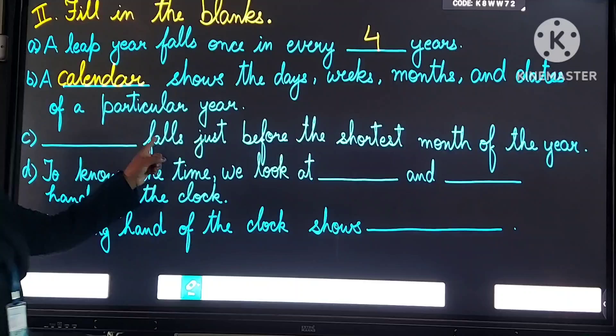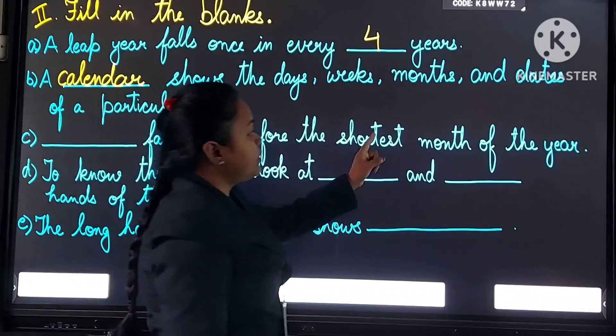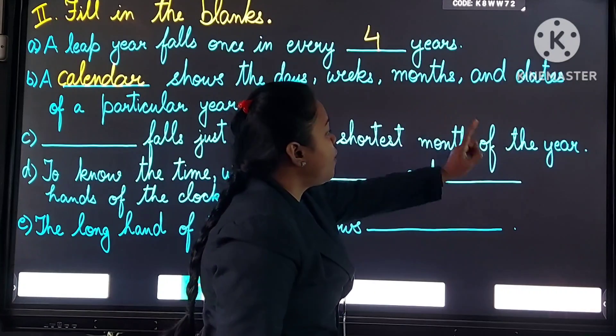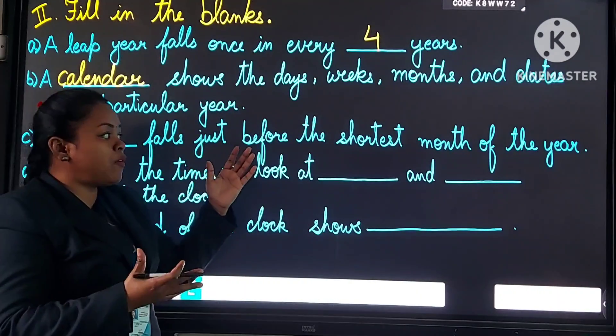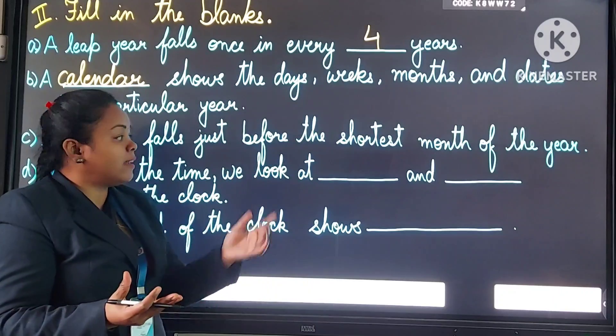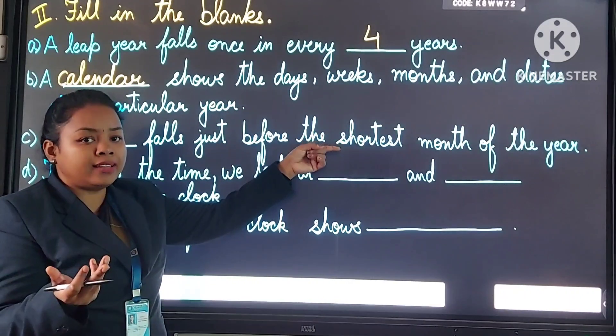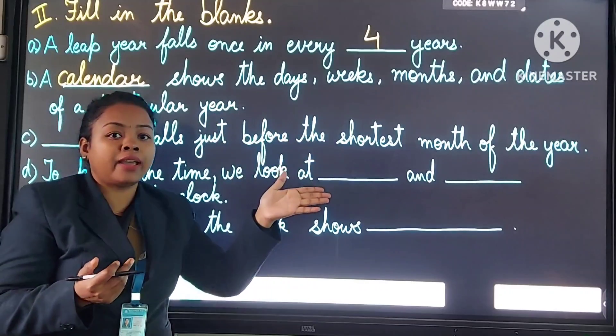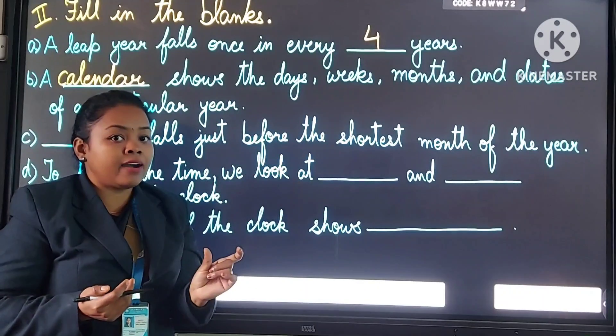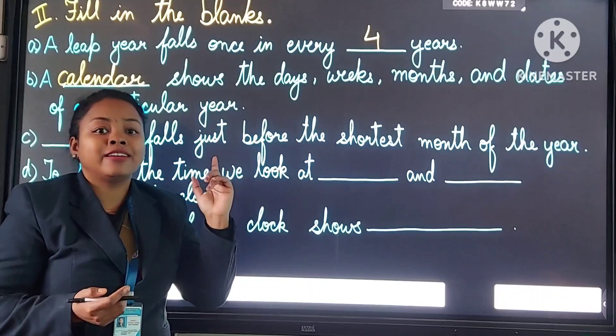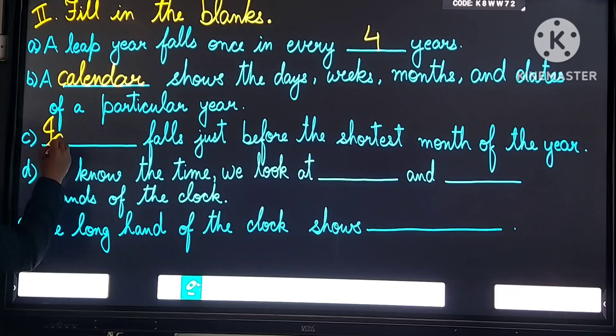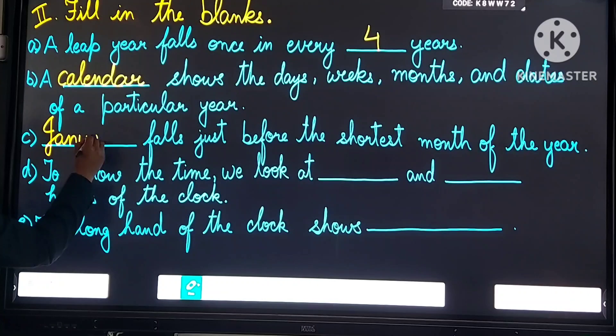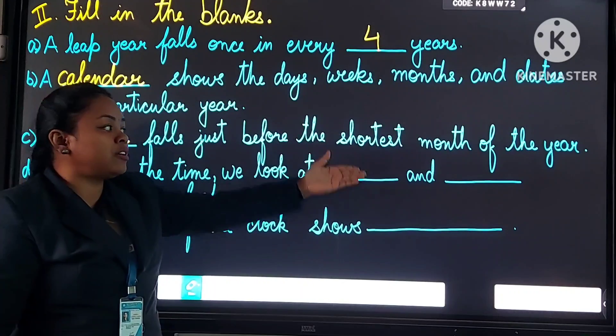Question number C. Dash falls just before the shortest month of the year. Kya aata hai just before, kiske? Shortest month ki pehle kya aata hai? Shortest month kaun sa hai? February. February ki pehle kya aata hai? Yes, very good. January. We will write this kalhe: J-A-N-U-A-R-Y. January falls just before the shortest month.